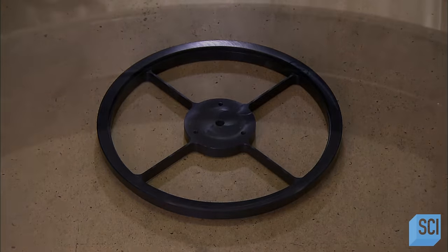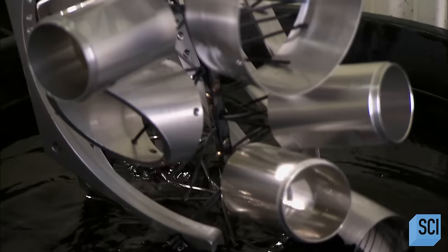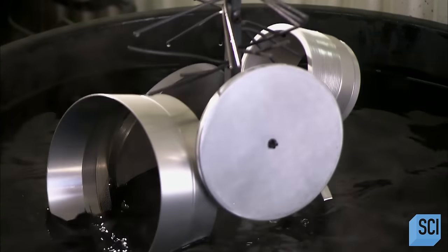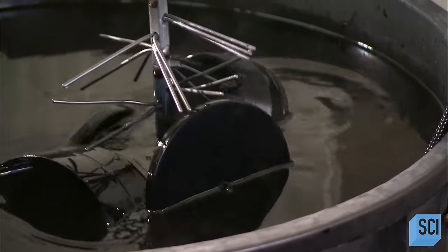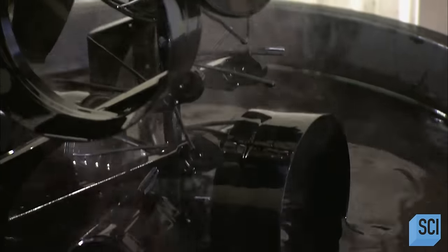After coating the metal parts with the protective oxide, they plunge them into a vat of black dye. The dye soaks into the oxidized pores and seals the surface of the parts.